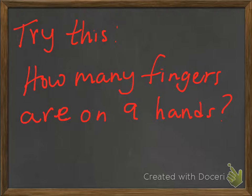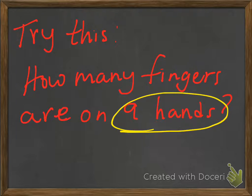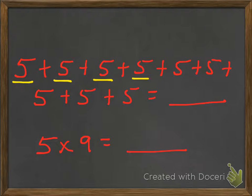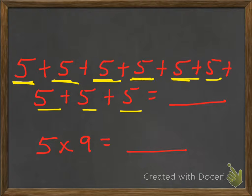Alright, hopefully you have a good answer. Let's take a look at what you said. How many fingers are there on nine hands? A little bit bigger this time. Did you draw anything, or did you write it out? You could have actually drawn nine hands. We've got five, five, five, five, five, five, five, five, five — nine fives. If we added these all up, we'd go: five, ten, fifteen, twenty, twenty-five, thirty, thirty-five, forty, forty-five.